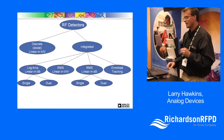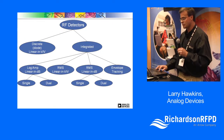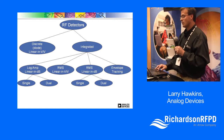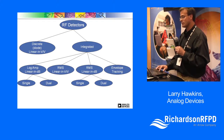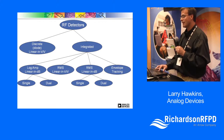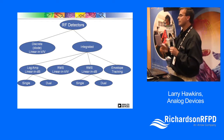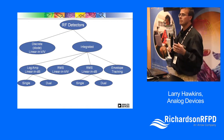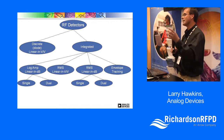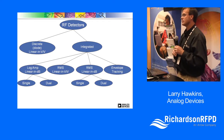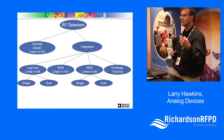As a summary, initially you had discrete diode detectors that were linear in volts per volt. Analog Devices developed integrated power detectors offering a choice of log amps, RMS power detectors linear in volts per volt, RMS power detectors linear in dB, and envelope tracking. In both log amps and linear-in-dB RMS detectors, you have single and dual configurations to meet any power detection requirement and measure any signal type accurately across temperature.